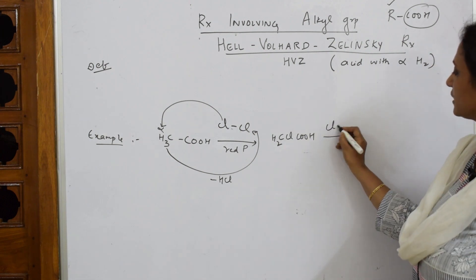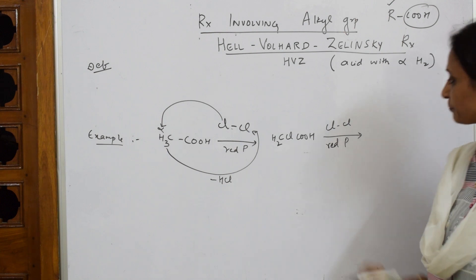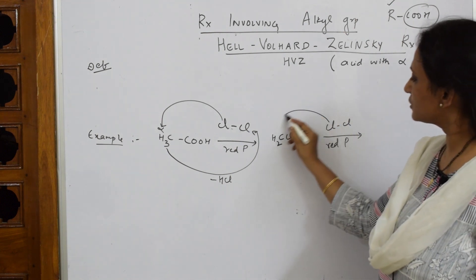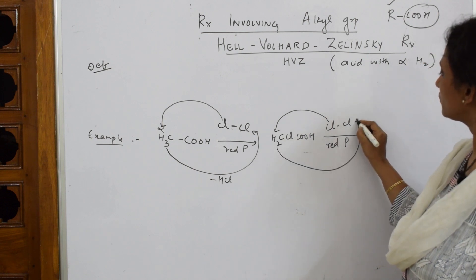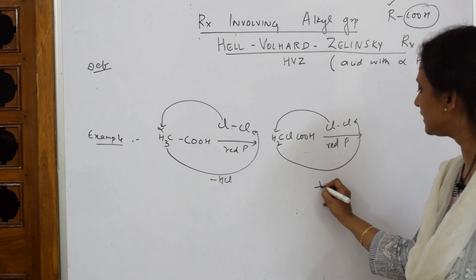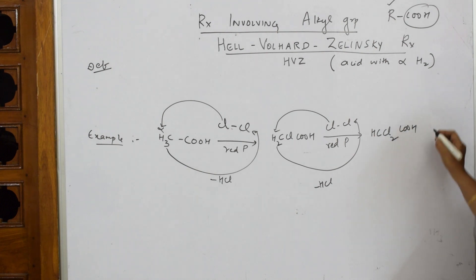Now I'm going to further treat this with chlorine again and red phosphorus - this is important, red phosphorus is important. Now again this chlorine is going to replace this hydrogen, this hydrogen is going to come out with this chlorine. So again minus HCl. What do I get? I get HCCl2COOH.